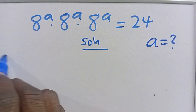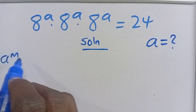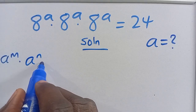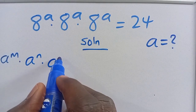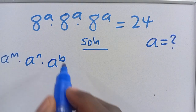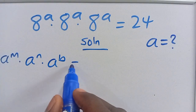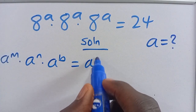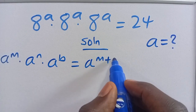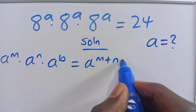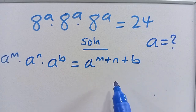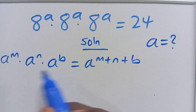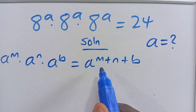Recall that when we have A to the power of M, multiplied by A to the power of N, multiplied by A to the power of P, we can write this as A to the power of M plus N plus P. The reason is that they have the same base — we take one base and add the powers together.